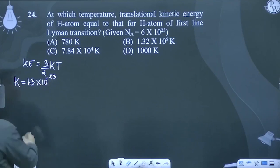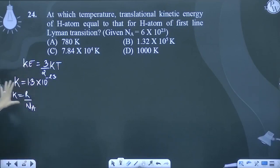Then k, we call R by Na. This is how we have the kinetic energy, which is translational kinetic energy.